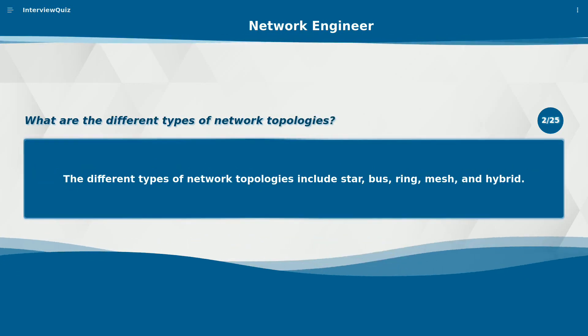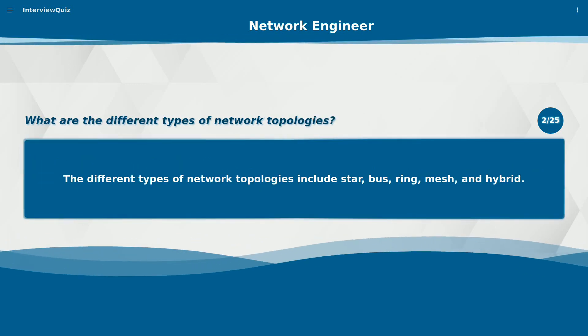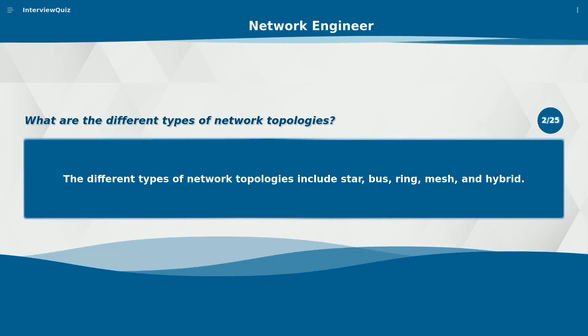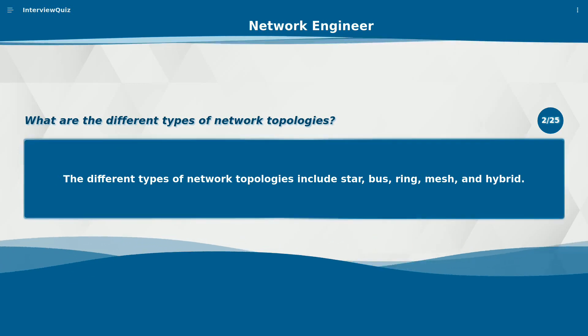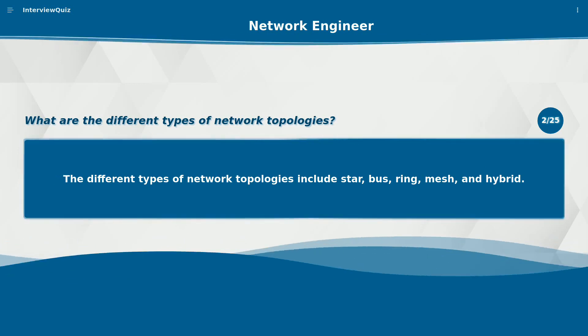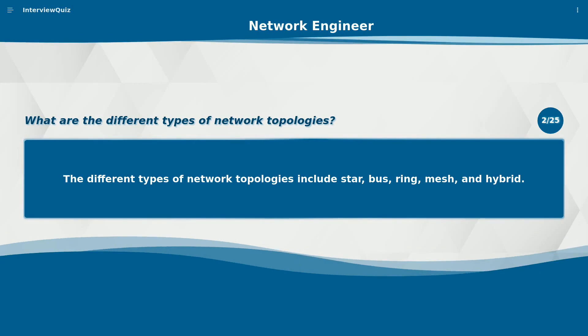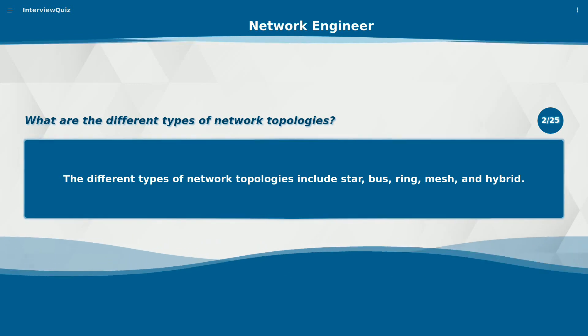What are the different types of network topologies? The different types of network topologies include star, bus, ring, mesh, and hybrid.